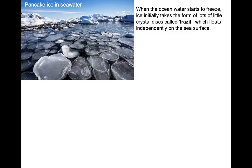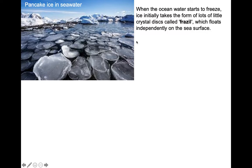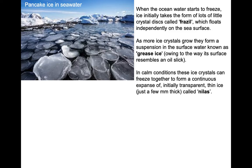When ocean water starts to freeze from the top because of very low atmospheric temperatures, particularly in wintertime near the polar regions, ice initially takes the form of lots of little crystal disks called frazil ice. These frazil crystals float independently on the sea surface. As more ice crystals grow, they form a suspension in the surface water known as grease ice, which almost looks like an oil slick on the surface of the ocean water.